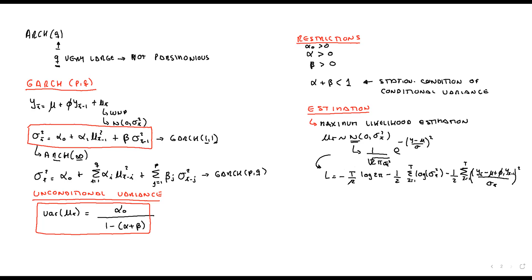To summarize: the estimation of GARCH models is not done via sum of squared residuals — it is done only numerically using the maximum likelihood estimation function. Let's now take a look at how we estimate these models using EViews.